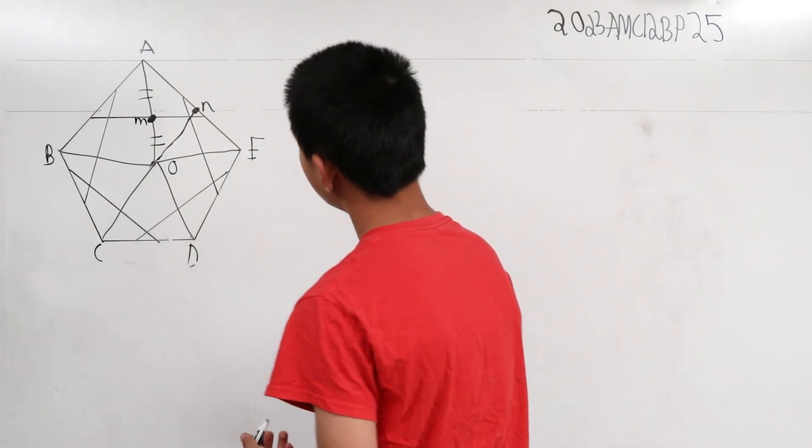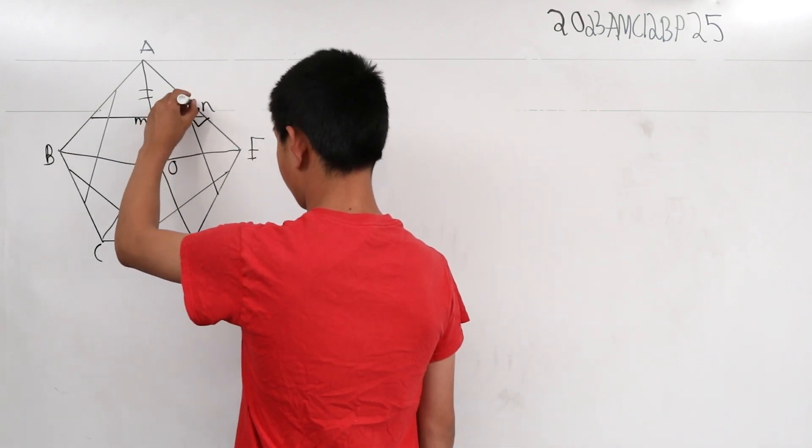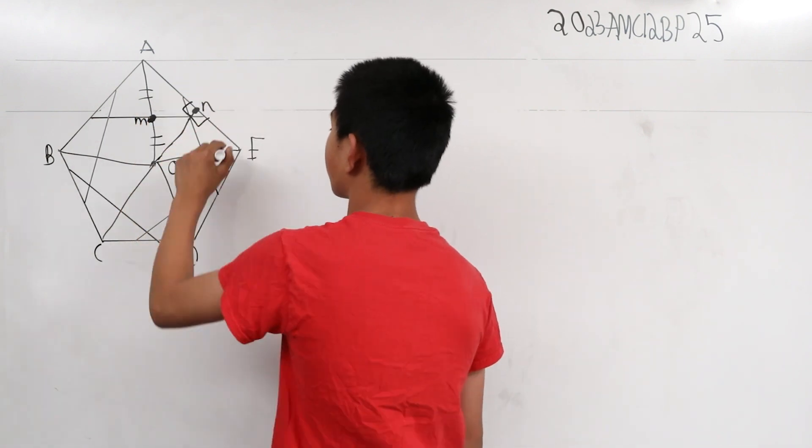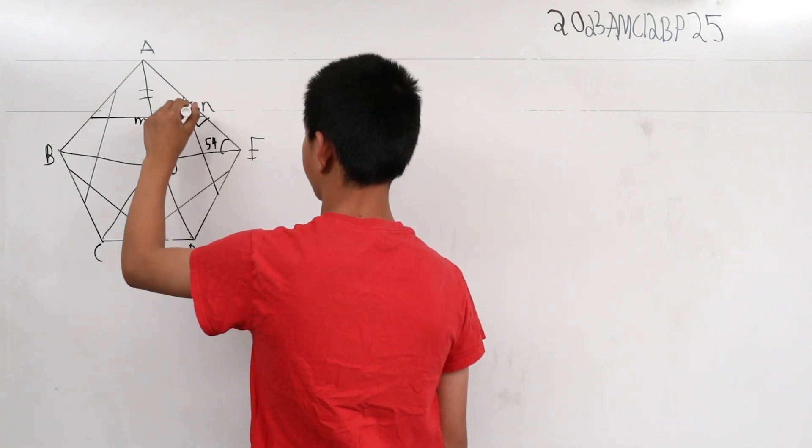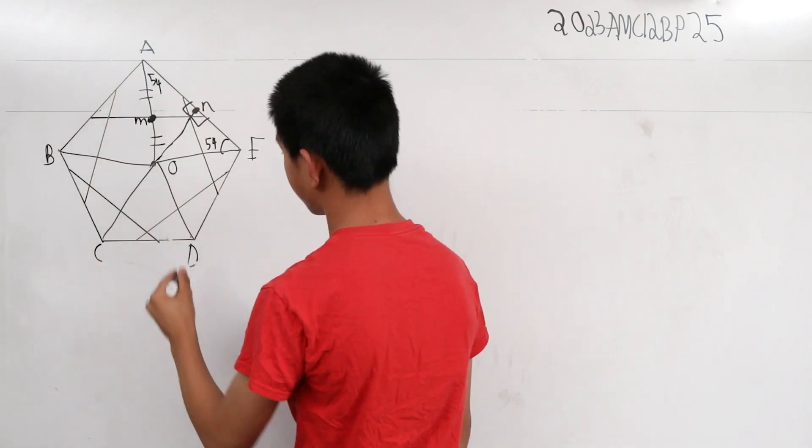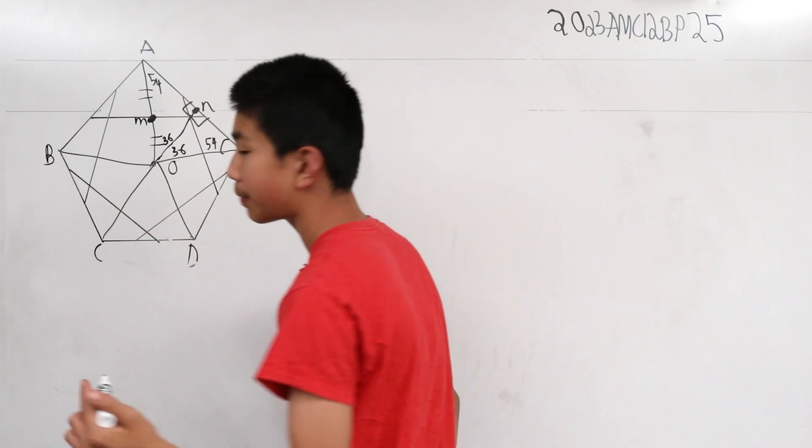We realize that this is 90 degrees, this is 90 degrees. And we know that this angle is 54 degrees, 54 degrees. So that means this angle is 36. And they're all 36 degrees, respectively.